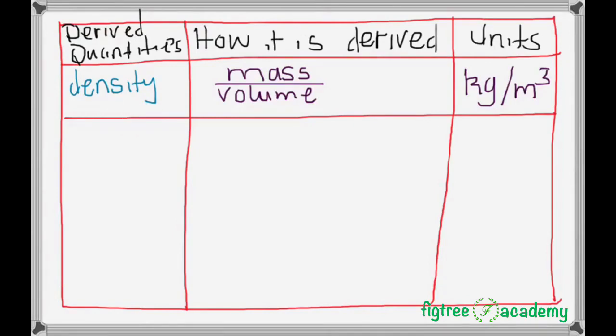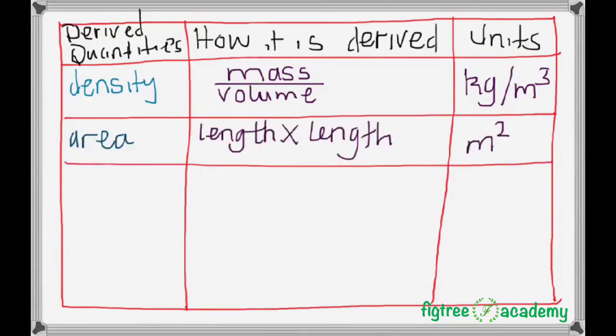And as you can see from the formula of density, which is written as mass over volume, its derived units are the kg for mass per cubic meter, which is emanating from the volume. Then, the next derived quantity that we have here is area. From the formula of area, which is length by length, we have as a unit the square meter.